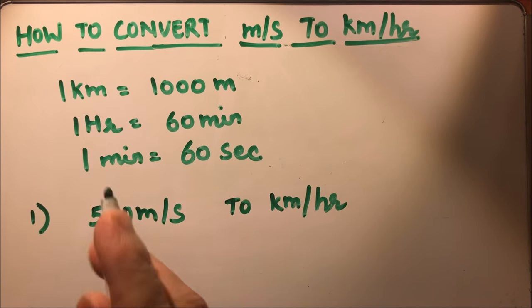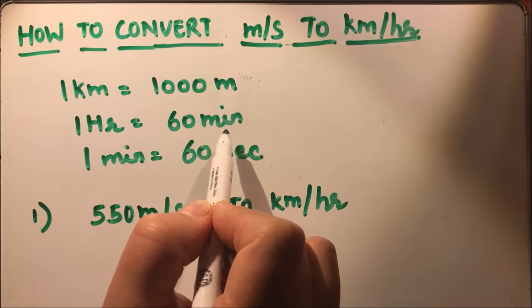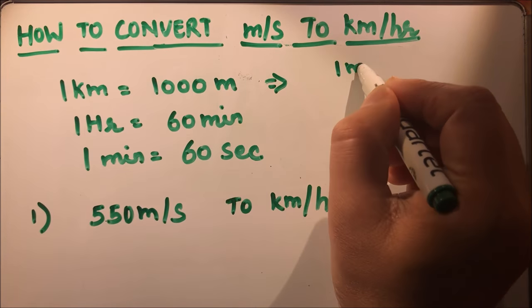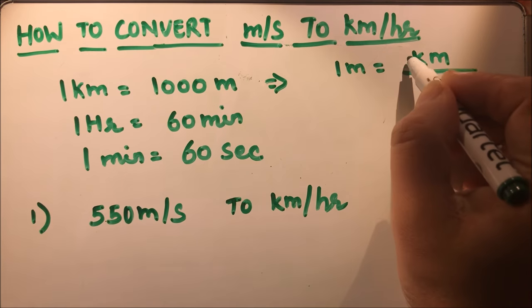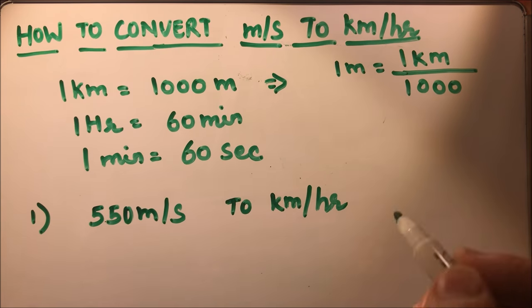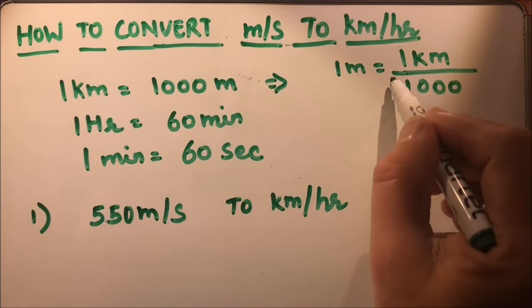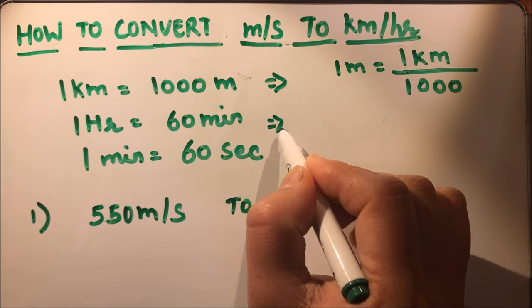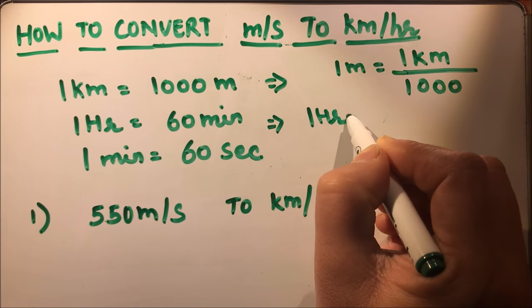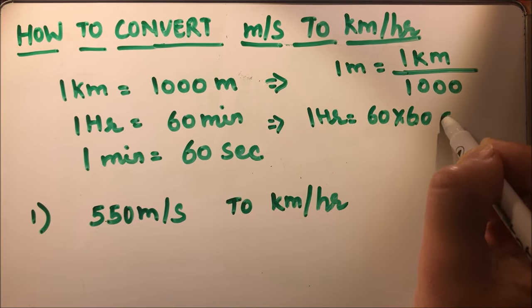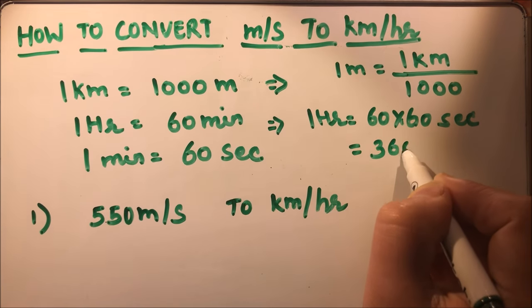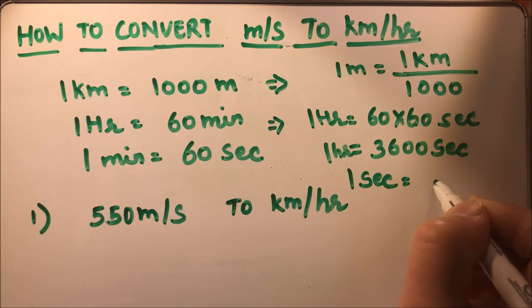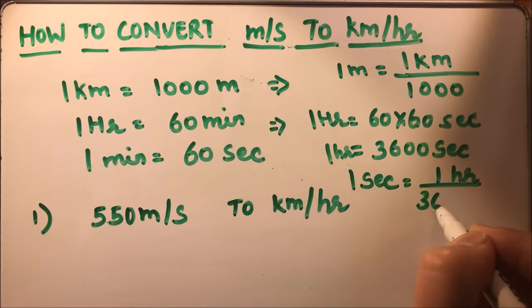I have written basic relations here. One kilometer is thousand meters, one hour is 60 minutes, and one minute is 60 seconds. From the first relation, we can write one meter as one kilometer over thousand. And since one hour is 60 times 60 seconds, that is 3600 seconds, one second will be equal to one hour over 3600.